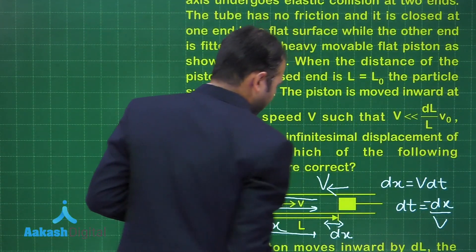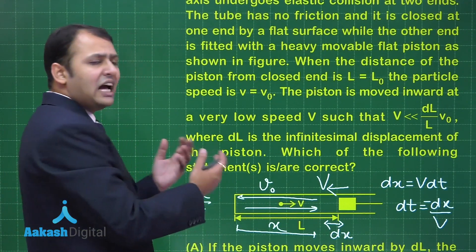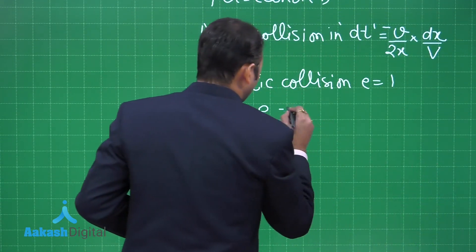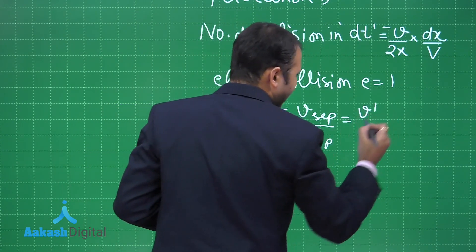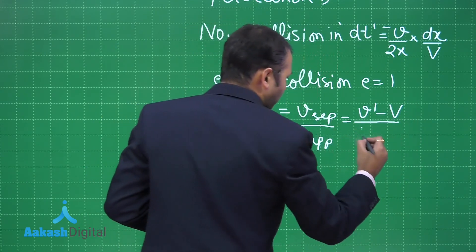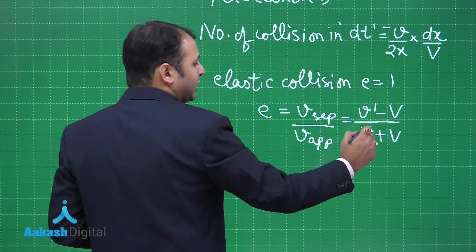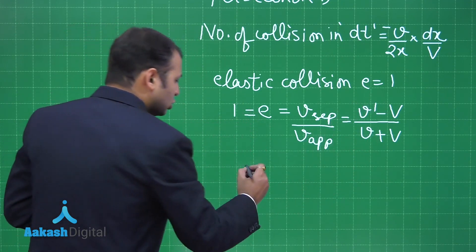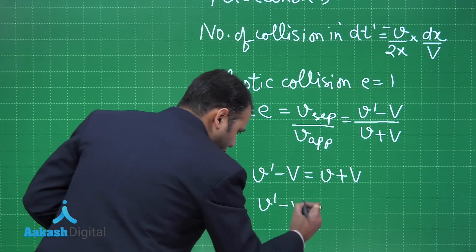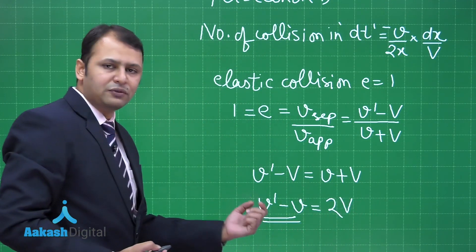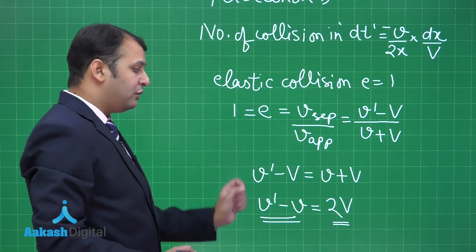While the particle moves toward the piston it has velocity v, and while moving away it has velocity V′. So velocity of separation by velocity of approach gives: (V′ − V) / (v + V) = 1, where capital V is the piston's velocity. Therefore V′ − V = v + V, giving V′ = v + 2V. The change in velocity per collision is 2V, confirming option C is correct.